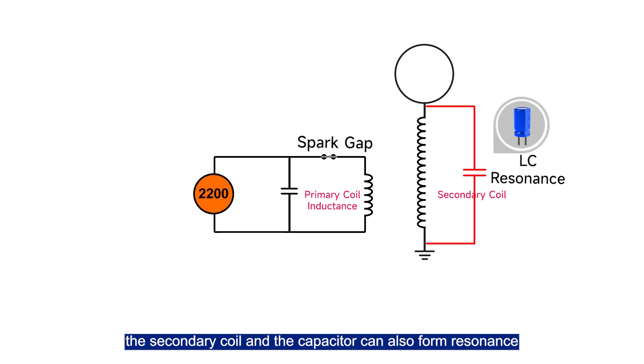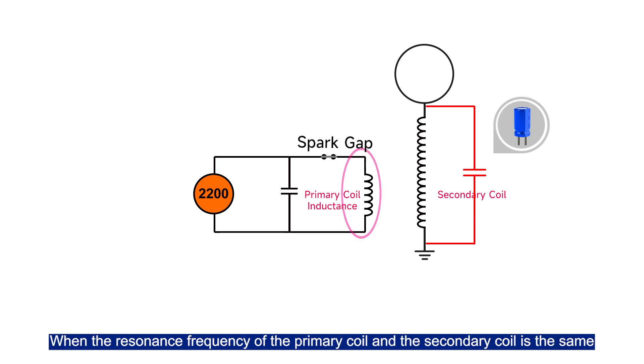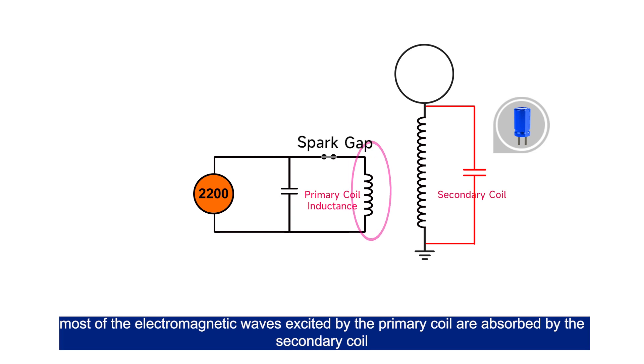The secondary coil and the capacitor can also form a resonance. When the resonance frequency of the primary coil and the secondary coil is the same, most of the electromagnetic waves emitted by the primary coil are absorbed by the secondary coil.